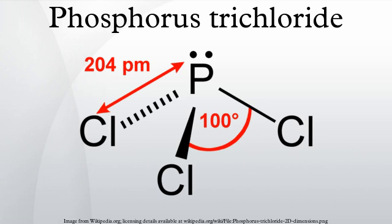Redox reactions: PCl3 is a precursor to other phosphorus compounds, undergoing oxidation to phosphorus pentachloride, thiophosphoryl chloride, or phosphorus oxychloride.